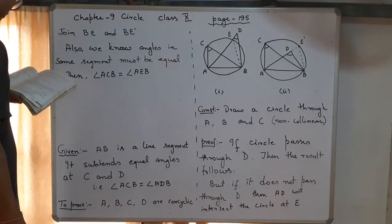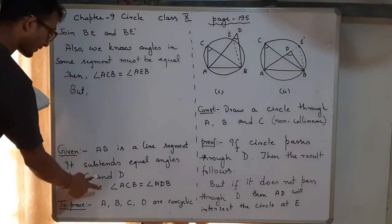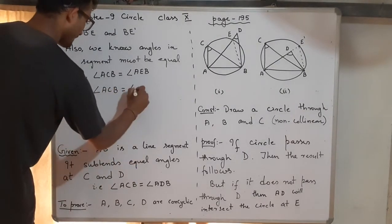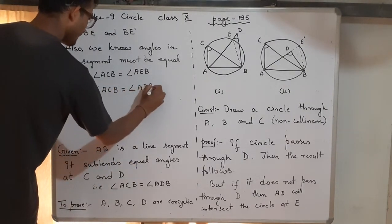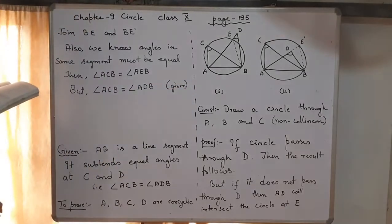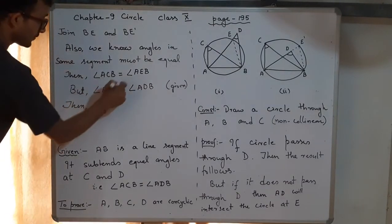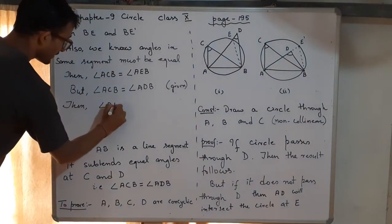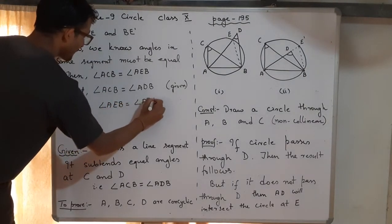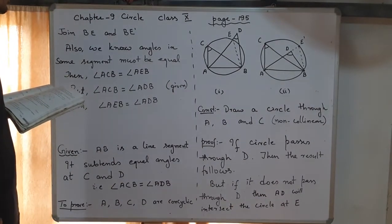But from the given condition, we know that angle ACB equals angle ADB. Therefore, it follows that angle AEB equals angle ADB.